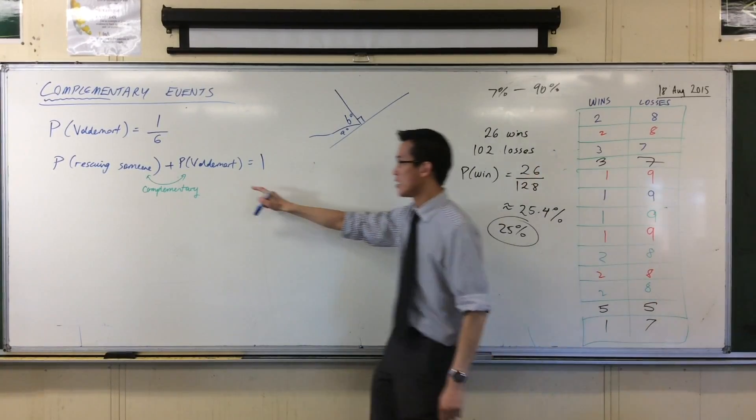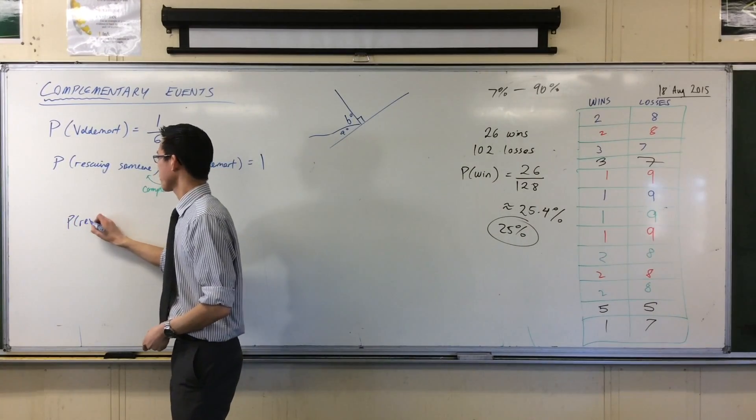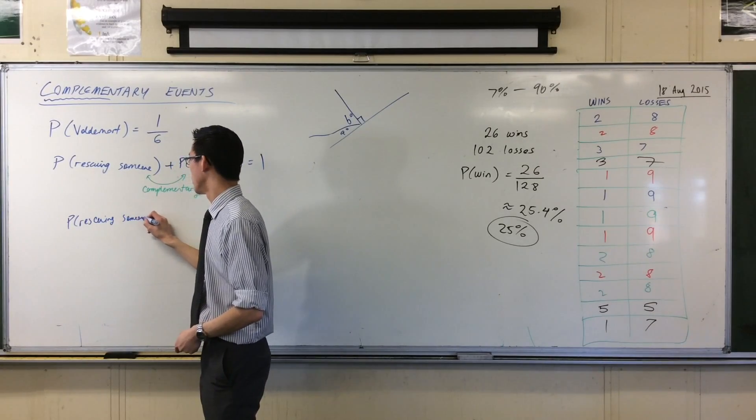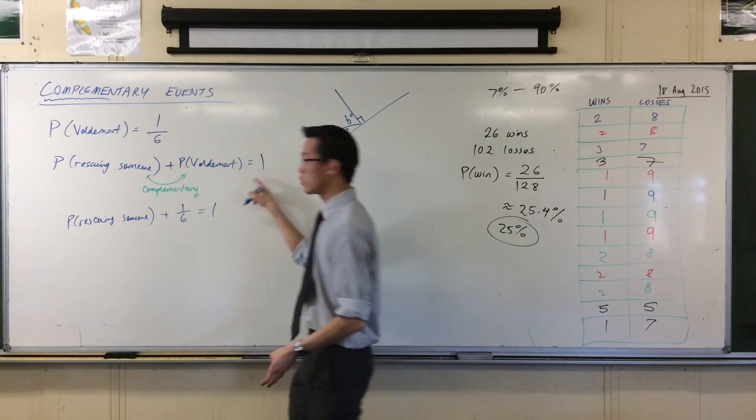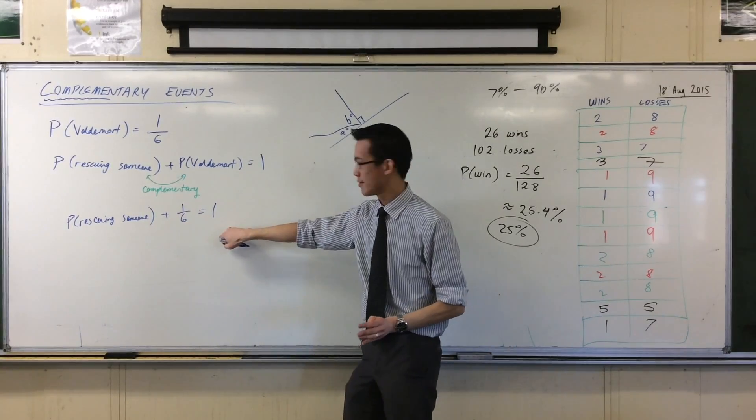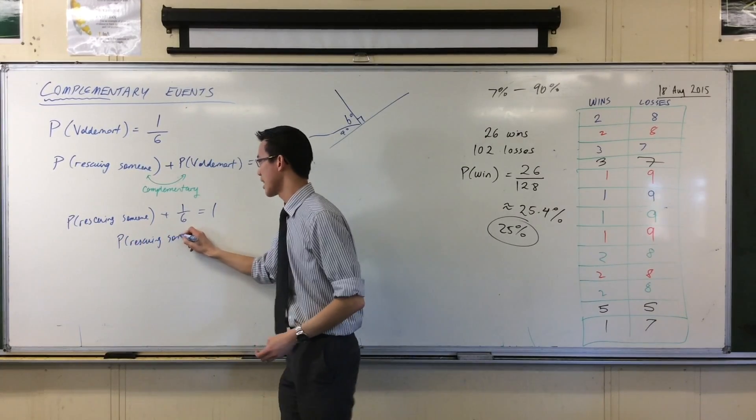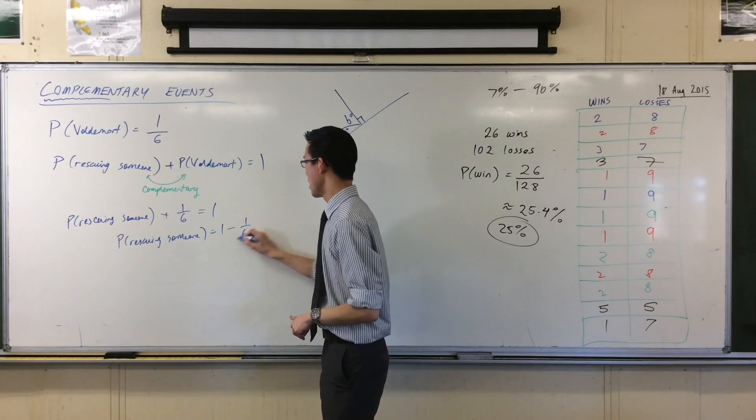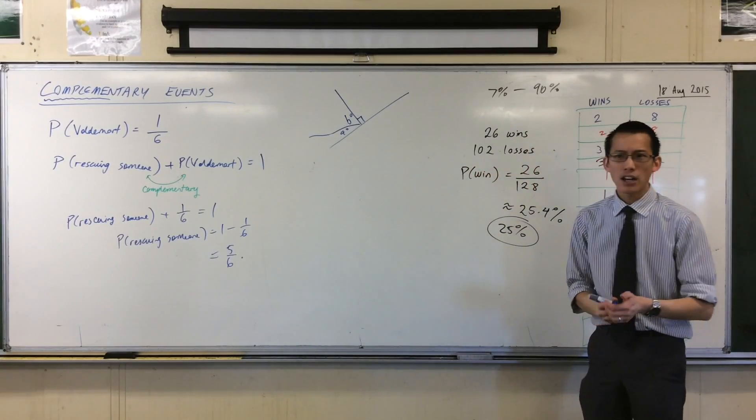Now I'm going to finish this off. You already know what the probability of getting killed by Voldemort is. So I'm going to write, just going down to the next line, the probability of rescuing someone plus 1/6, that should equal one, because one of these definitely has to happen. That's why it's a one. So now just rearranging that, if I take that 1/6 over to the other side, that's what gives me the 5/6 that you were already expecting before.